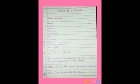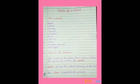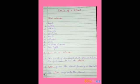Fourth: creeper — C-R-E-E-P-E-R, creeper. Fifth: climber — C-L-I-M-B-E-R, climber. Sixth: herb — H-E-R-B, herb. Seventh: shrub — S-H-R-U-B, shrub. Eighth: trees — T-R-E-E-S, trees.